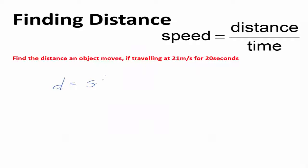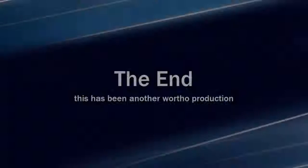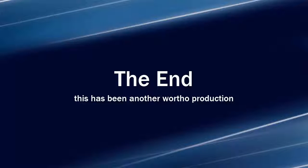So for this question we're going to put speed times time. We're travelling at 21 metres per second for a time of 20 seconds, and we can see that this will be a distance of 420 metres. Units are important.